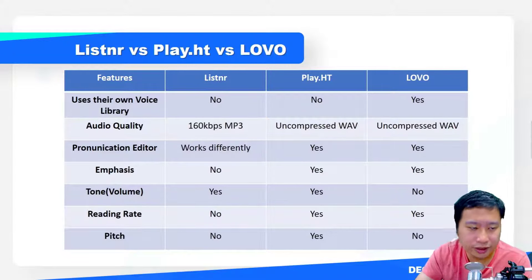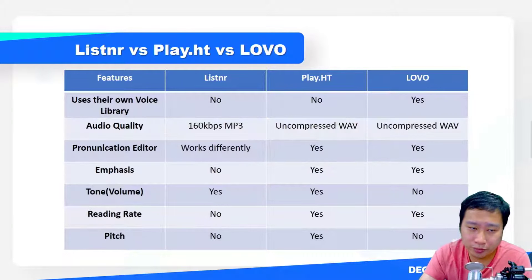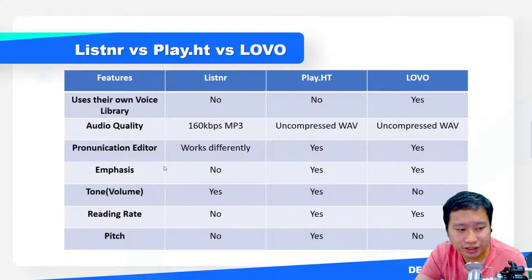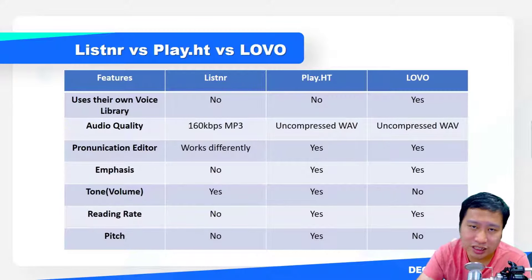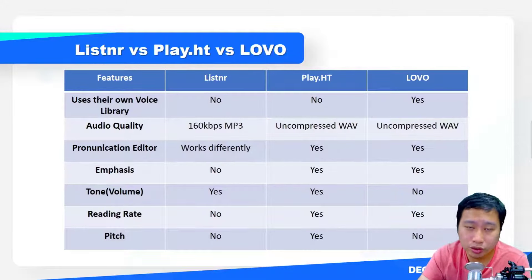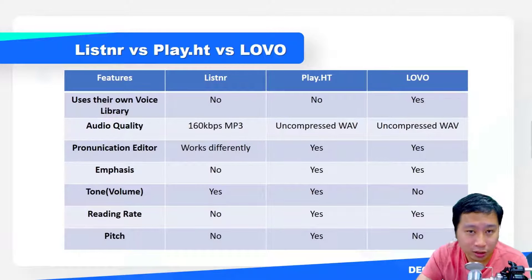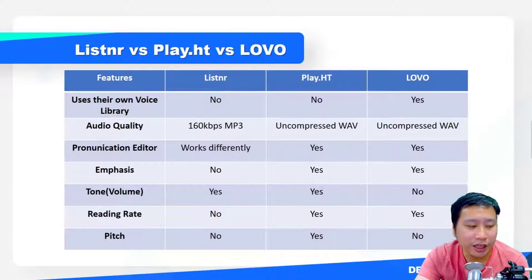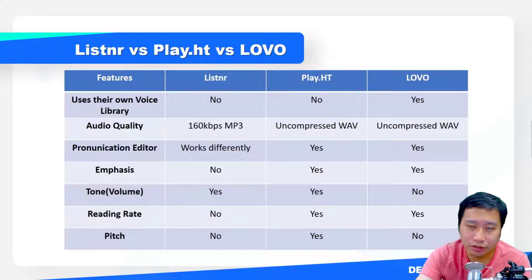For the pronunciation editor, Listner does have one but it works differently. PlayHT and Lovo give you better control over pronunciation. For emphasis, Listner does not have any feature to emphasize certain words, while PlayHT and Lovo do. For volume/tone control on certain words, Listner and PlayHT have that option but Lovo does not. For reading rate, only PlayHT and Lovo allow you to adjust the rate for the entire text or select certain words, and pitch adjustment is only available in PlayHT.